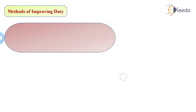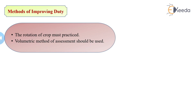Rotation of crops must be practiced. If a farmer grows only a single crop throughout the year or for a long period, the fertility of the land will be reduced, so crop rotation must be taken into consideration. Additionally, the volumetric method of water assessment should be used. Assessment of water refers to the payment or charges that farmers must pay, and the volumetric method should be adopted for this purpose. These are the methods used for improving duty.